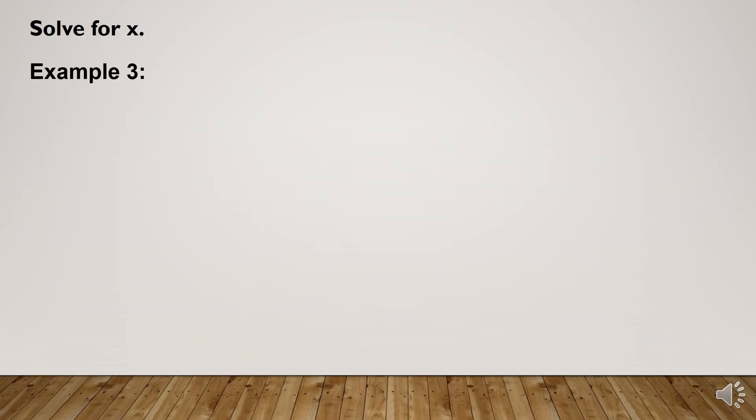Example number 3: The given rational equation is (4x + 1)/(x + 1) - 3 = 12/(x² - 1).